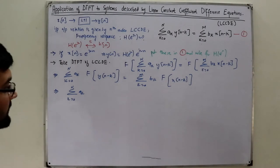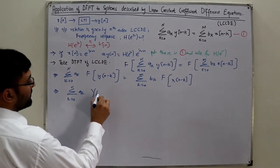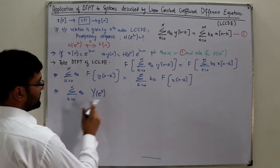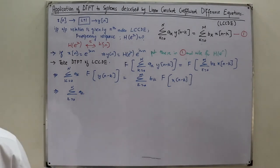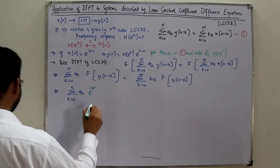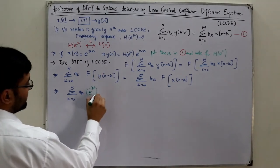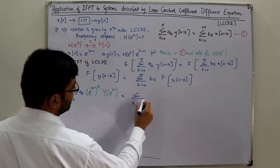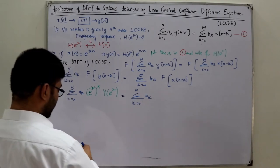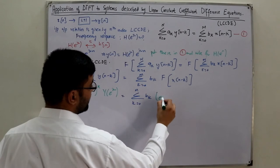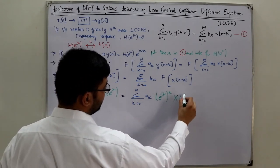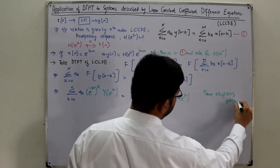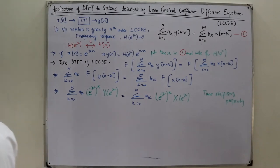Using the time-shifting property, the Fourier transform of y(n-k) is Y(e^jω) multiplied by e^(-jωk). So the left side becomes summation k from 0 to N of a_k times e^(-jωk) times Y(e^jω). Similarly, the right side becomes summation k from 0 to M of b_k times e^(-jωk) times X(e^jω).